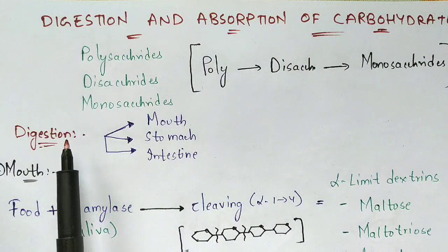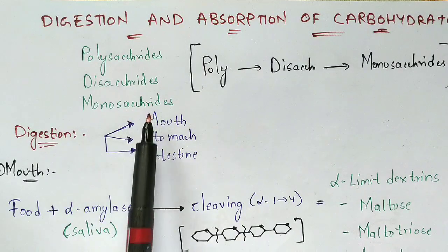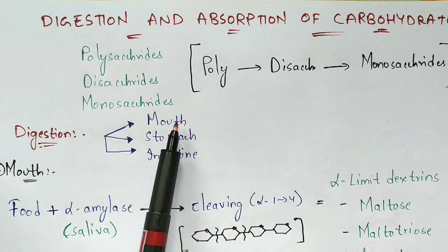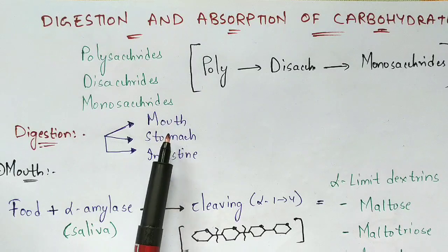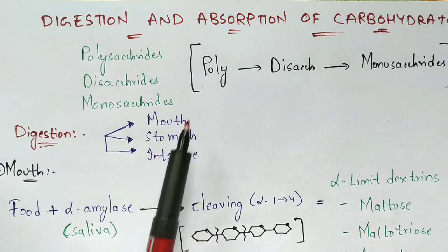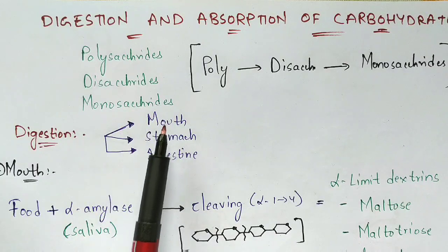The digestion of carbohydrates begins from the mouth and ends towards the intestine. The food present in the mouth enters into the stomach, and from the stomach it enters into the intestine. Carbohydrate digestion occurs in these three parts only.